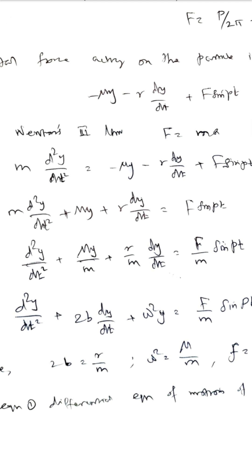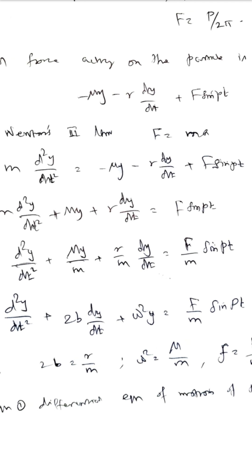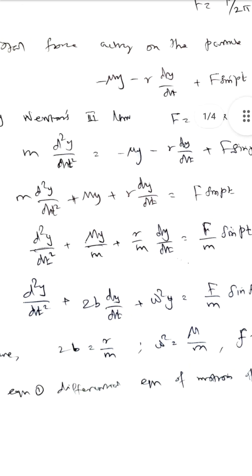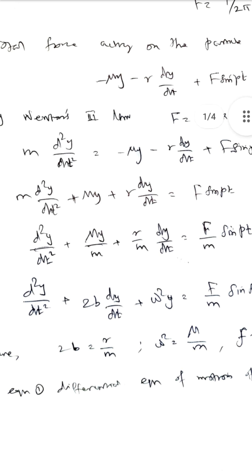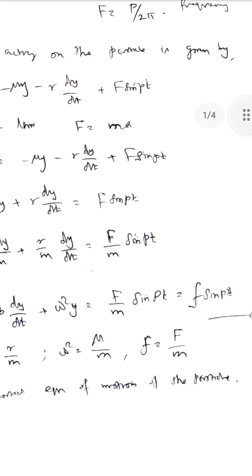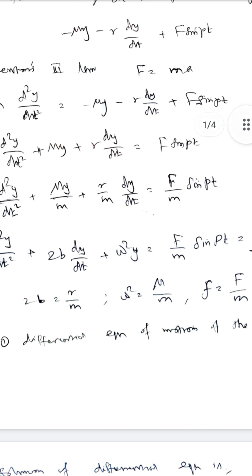Now the first term will cancel. Divide by m: d²y/dt² + (μ/m)y + (r/m)·dy/dt = (F/m)sin(pt). We substitute: 2b = r/m, ω² = μ/m, and small f = F/m. So d²y/dt² + 2b·dy/dt + ω²y = f sin(pt).